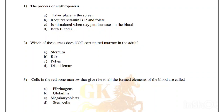Human anatomy and physiology full syllabus MCQs. First question: The process of erythropoiesis requires vitamin B12 and folate, and is stimulated when oxygen decreases in the blood. Correct answer is option D, both B and C.